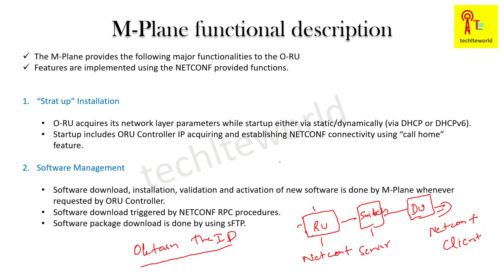Once the RU obtains the IP address, the second process is call home. Call home means the RU came up and shouts out: 'Hello, are you listening? Can you respond? Can you establish a NETCONF connectivity?' This feature is initiated by the RU. Then the DU replies, 'Yes, I'm listening.' NETCONF protocol has a set of rules by which RU and DU coordinate with each other.